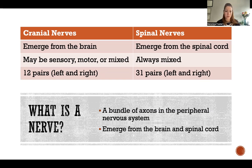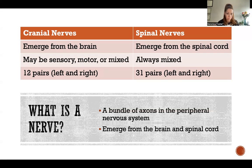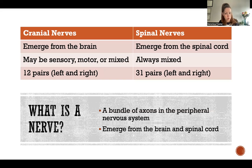Of our 12 pairs of cranial nerves, some are sensory, some are motor, and some are mixed. That means some cranial nerves only carry sensory information from the periphery to the central nervous system. Some only carry motor information from the central nervous system out to the periphery. And then some are mixed, meaning that they do both.